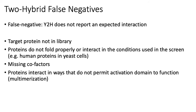A second problem is that your protein may not fold properly, or may lack necessary cofactors or other protein domains required for proper folding. Some protein domains change conformation upon binding to other domains. If protein A needs protein C present to fold properly and facilitate the interaction between A and B, you won't detect this interaction, because the yeast-2 hybrid as presented here only tests pairwise interactions. People have extended the yeast-2 hybrid screen to test three-way interactions, but those screens are extremely expensive and difficult.